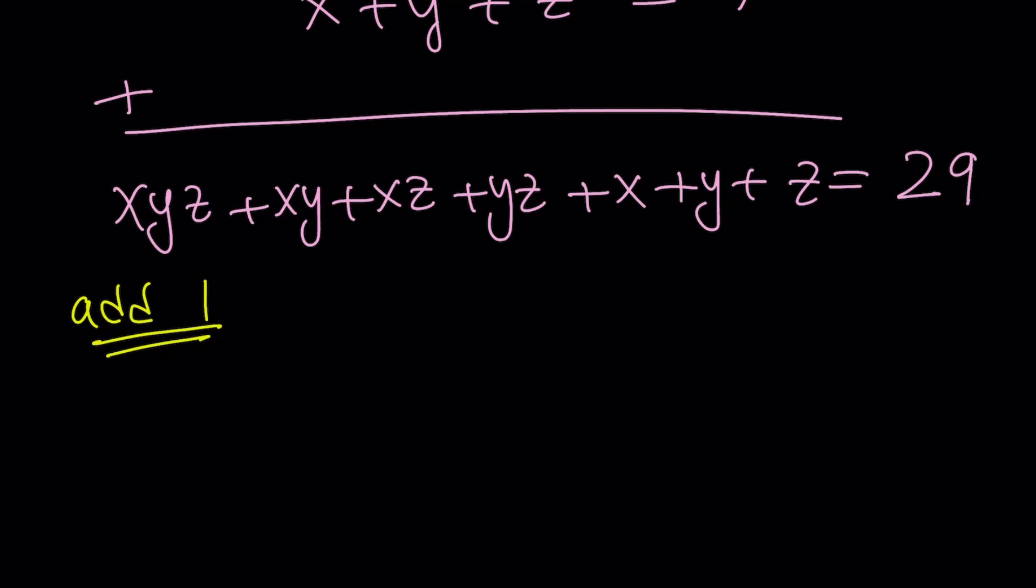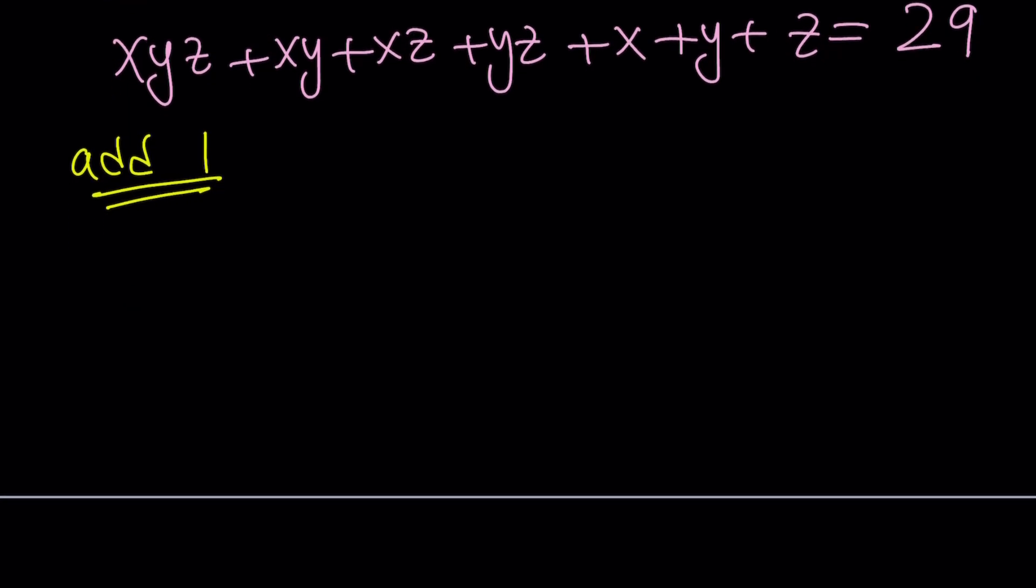So this is not the first time I'm coming up with something like this, but the idea is sort of mine. That's why I called it homemade. Anyways, if we add one to both sides, we're going to get xyz + xy + xz + yz + x + y + z + 1 = 30.